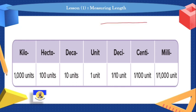When we speak about metric units used in metric measurement, the units are: kilo, hecto, deco, unit, deci, centi, and milli. Again: kilo, hecto, deco, unit.